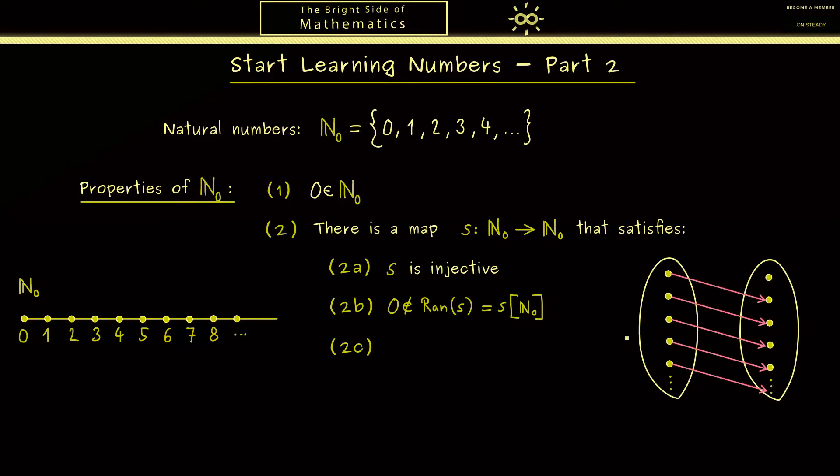Another visualization you can take for the successor map is given by arrows from left to right. There you should see the injectivity and also that 0 is not hit at all. Hence these two assumptions together explain that N₀ is an infinite set.